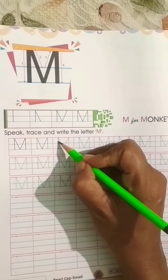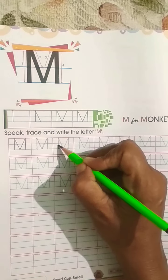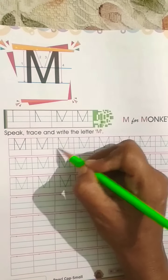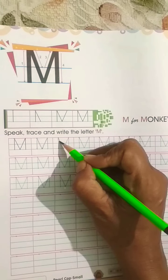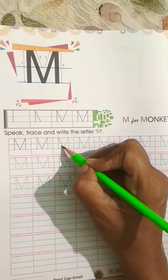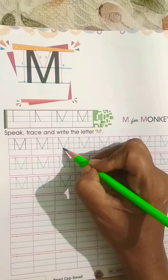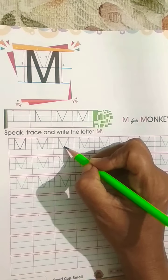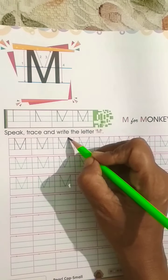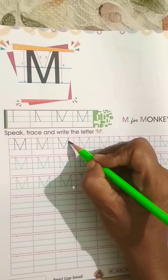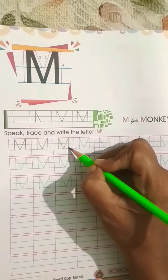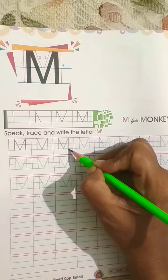Straight line top to bottom. Then slanting downwards. Slanting line upwards and straight line downwards. Like this.